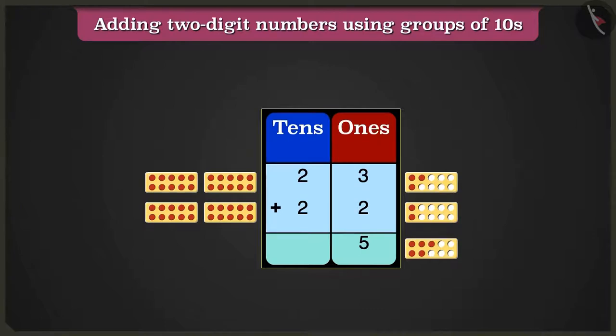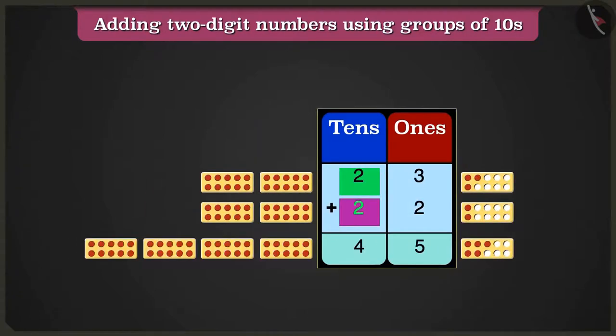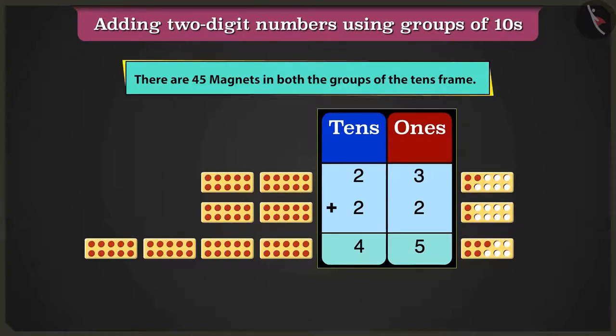Come to the box of tens. 2 tens plus 2 tens will make 4 tens. So here there are 4 tens and 5 ones. Therefore, in both groups of the tens frame, there are 45 magnets altogether.